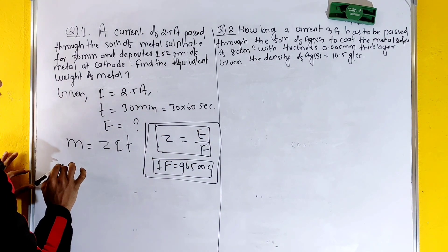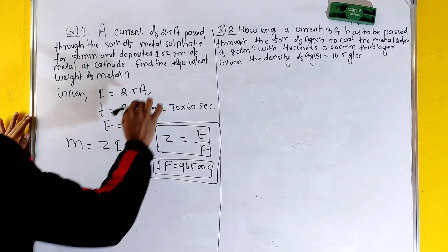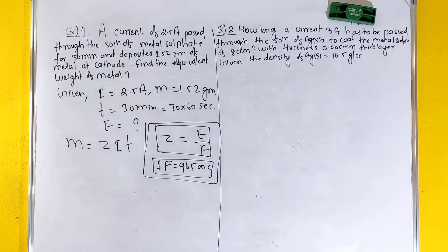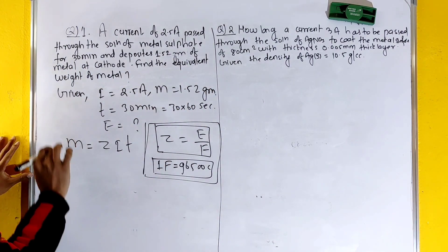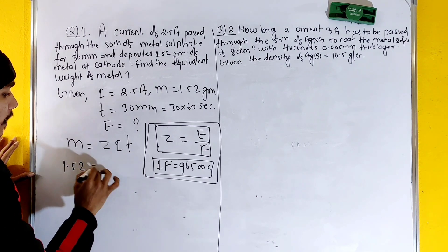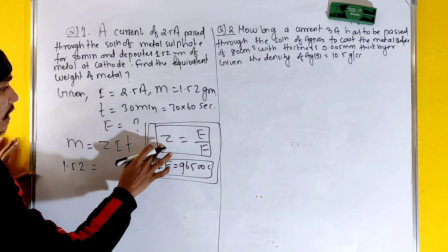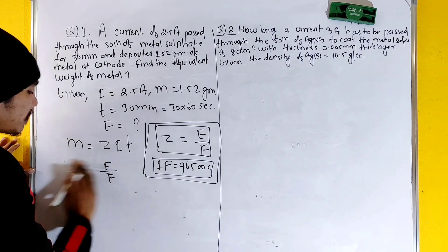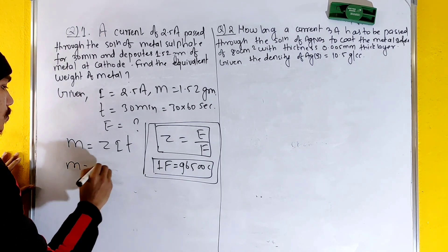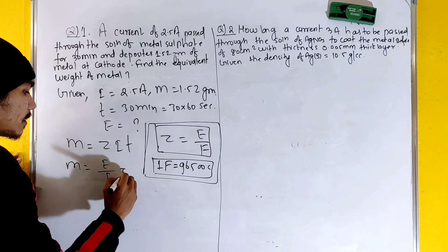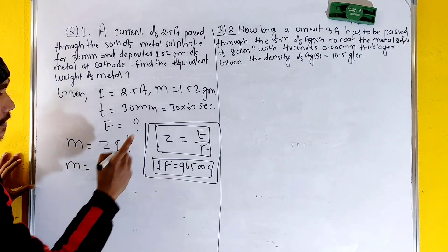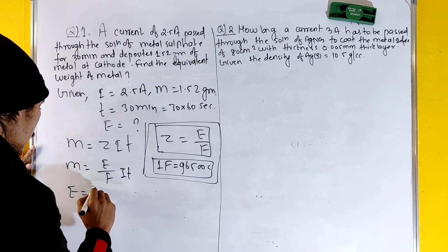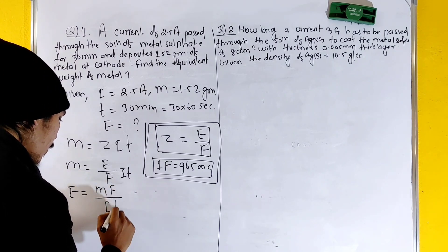Mass deposited m is equal to 1.52 grams. We substitute: 1.52 is equal to z times i times t, where z equals e divided by F. Rearranging, e is equal to m times F divided by i times t.